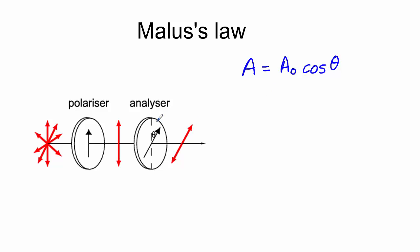So when theta is 0, the amplitude passing through is equal to the initial amplitude, all of the light passes through. When theta is 90, none of the light passes through, the amplitude is equal to 0, and for everything in between, we can calculate it by finding this component.